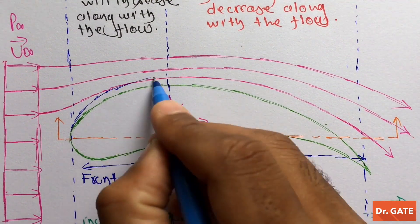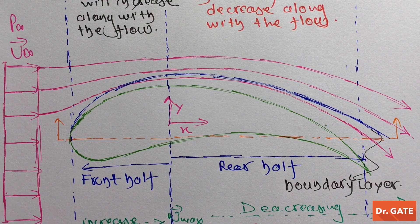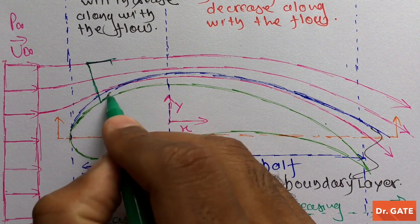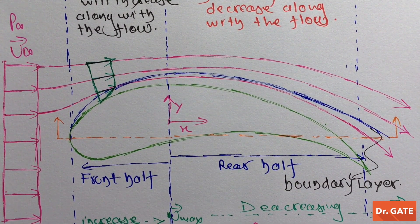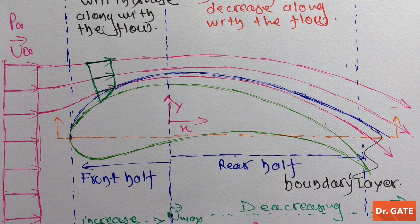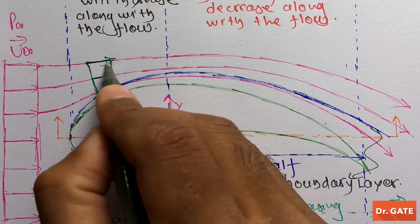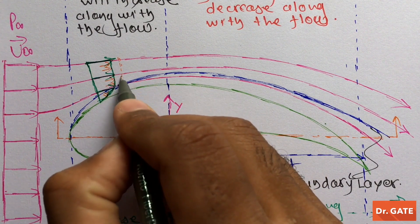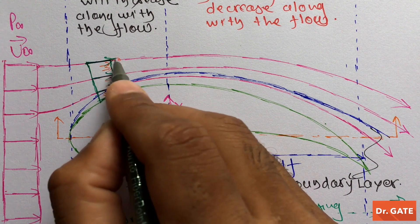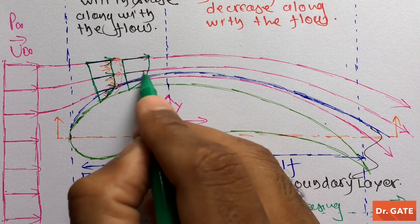This is the boundary layer above the surface of the aerofoil, and this is the velocity profile here. Since it is in the negative pressure gradient zone, pressure here is greater than the pressure ahead. Because of this, there is a net pressure force in the flow direction, which will try to increase the velocity of the fluid medium, and we get a slightly thicker velocity profile.